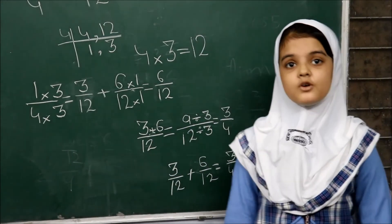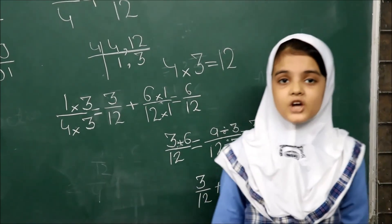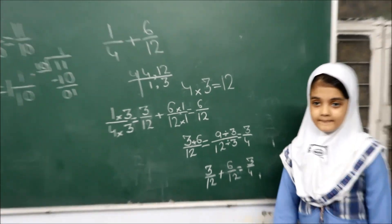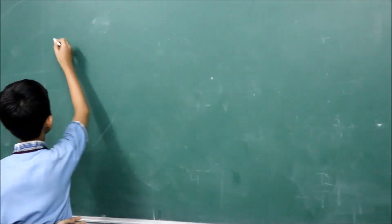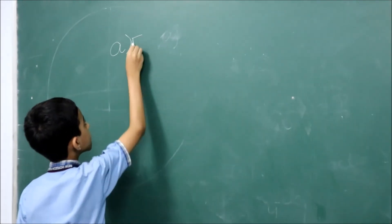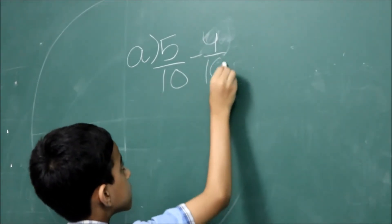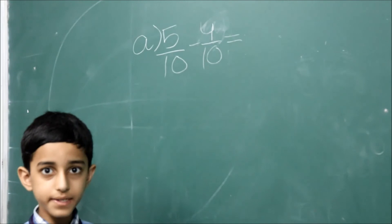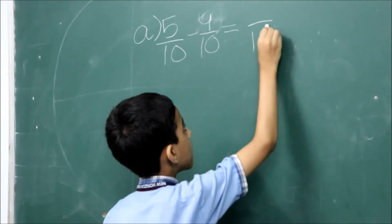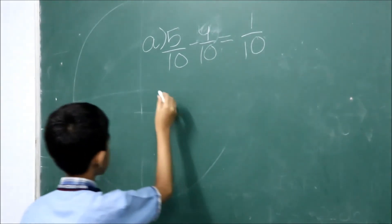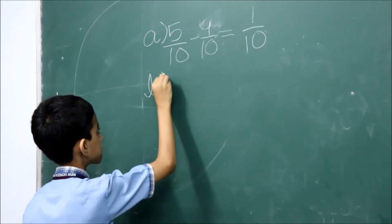I hope now you will be able to add fractions. That's all from my side. Now my friend Arhan will tell you how to subtract fractions. Now I am here to tell you how to subtract fractions. Let's take an example: 5 by 10 minus 4 by 10. We copy the denominator as the same, giving us 1 by 10.